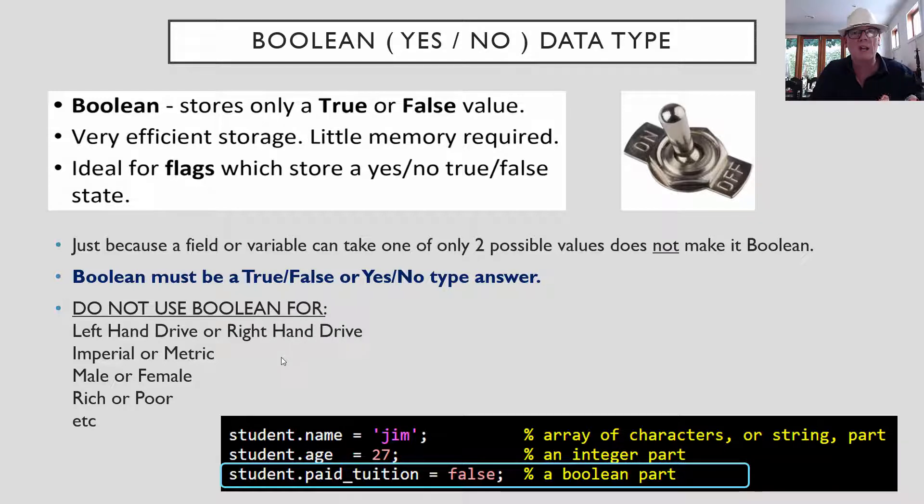If something's measured in imperial, like inches and feet, rather than being in metric, centimetres and metres, that is not Boolean. Male and female is not Boolean. Rich or poor is not a Boolean variable. So watch out for those on exams. Boolean can only be true, false, yes, no. That's its purpose. That's what it's used for. And it basically is like a binary electrical on off. You've only got two conditions, it's yes or no.